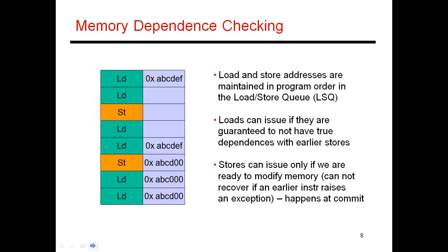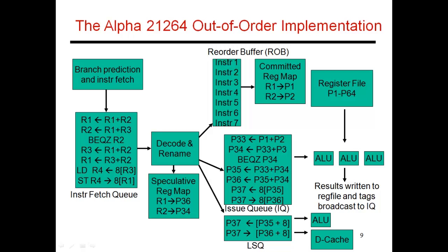With this load-store queue design in place, the process works as follows: the load-store queue is like an extension of the issue queue but contains only loads and stores. As registers are made available, you go to the ALU unit, compute the effective address, and store the address back. The load-store queue then checks for memory dependencies. When it is safe to issue a load, it proceeds and gets the result from the data cache. A store must wait until it is the oldest instruction in the reorder buffer before it is allowed to make any changes to data memory. This concludes our discussion of this out-of-order design, and in the next video I'll talk about how to introduce simultaneous multi-threading into this design.